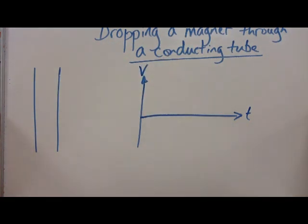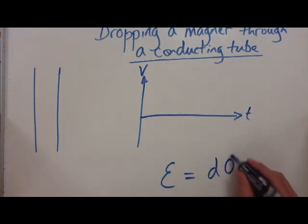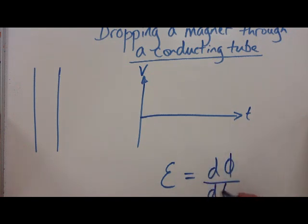Faraday's Law tells us that the EMF is equal to the rate of flux linkage. What that means is it's equal to the rate at which those flux lines get cut.